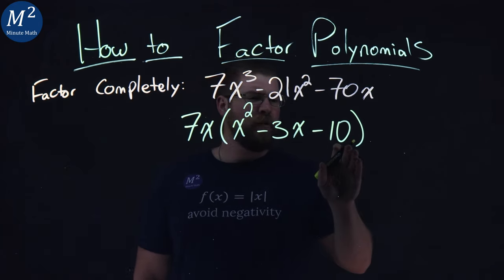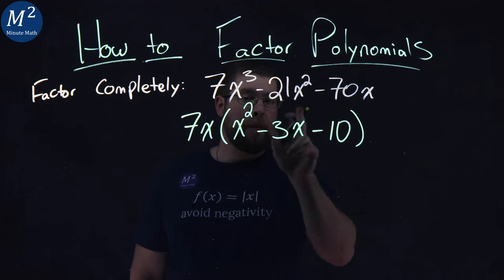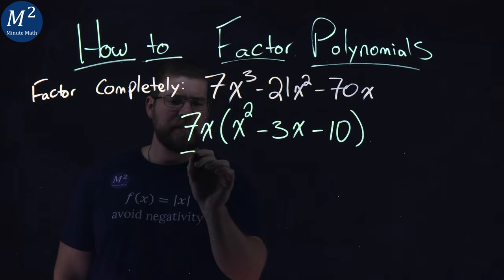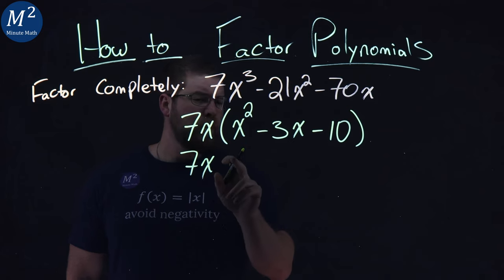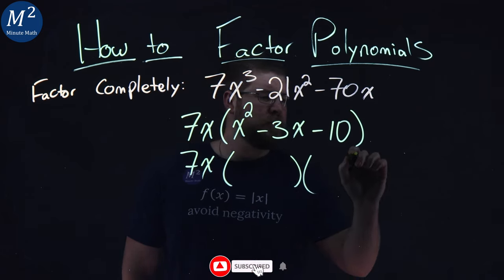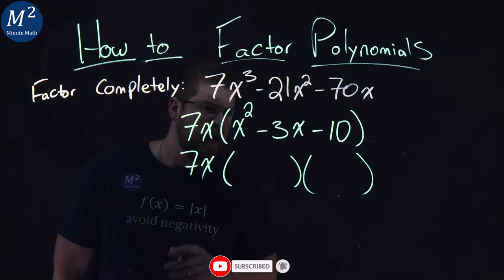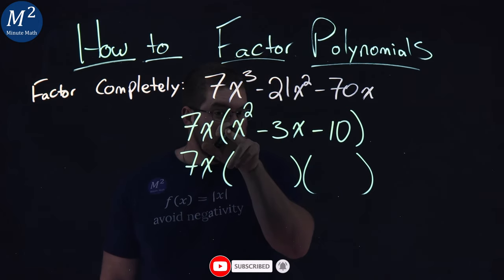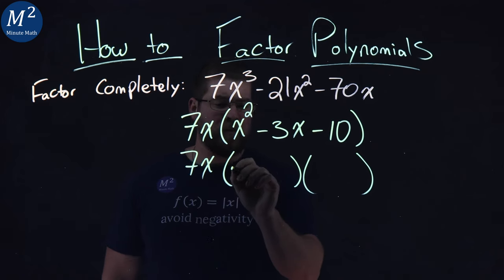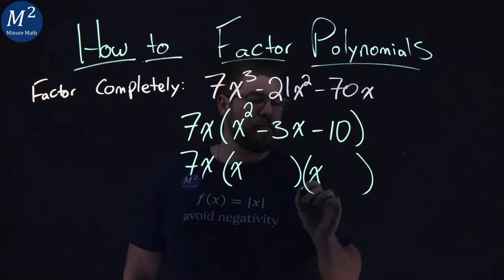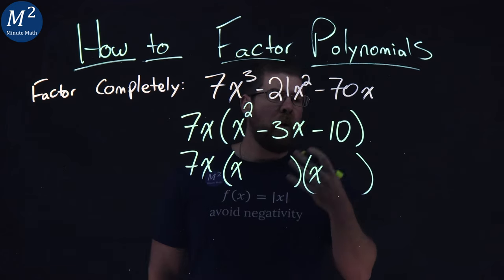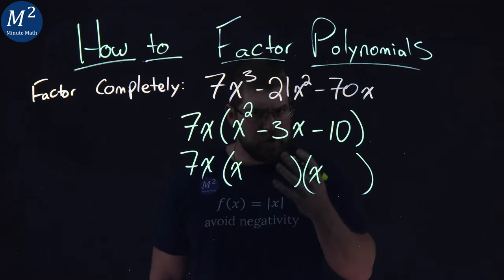Now we have this polynomial in the middle that we're looking at in parentheses. I'm going to rewrite my 7x, and I want to rewrite this middle section to see if I can write it in terms of two parentheses. I'm noticing an a value of 1 in front of the x squared — that makes it a lot easier. I have an x here and an x right there. Now I want to ask myself two questions.